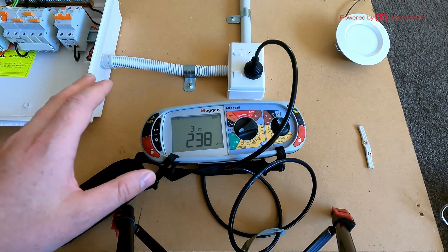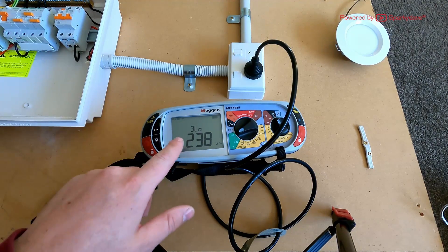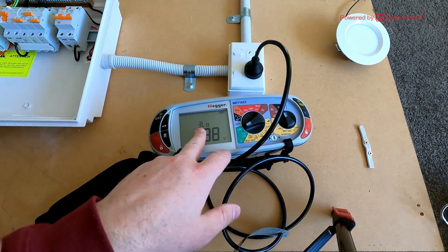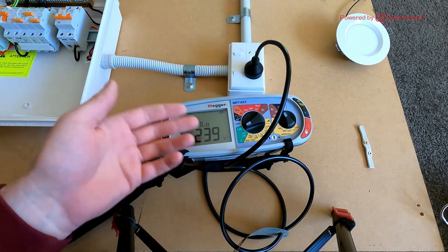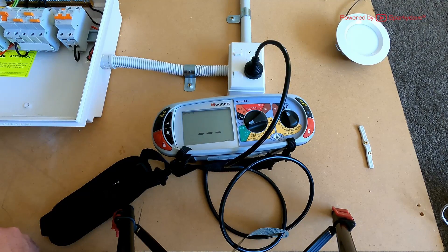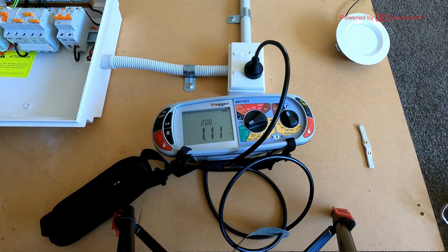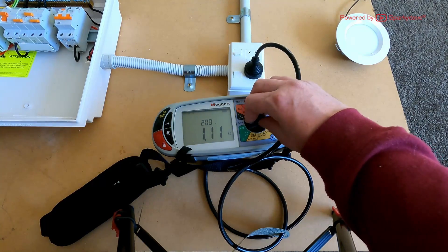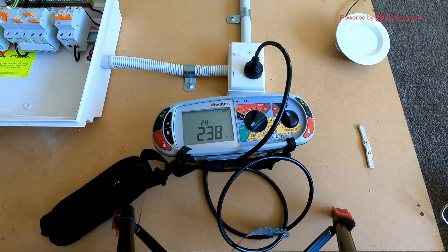Now this one here, because it's on the load side of the RCD, it will have to be your three lead low current test, which is default. And hit test. 1.11 ohms, 208 amps.